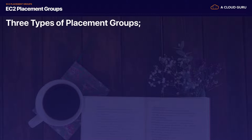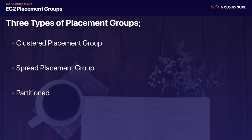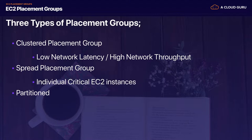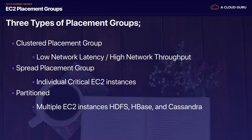EC2 placement groups define how you place your EC2 instances — there are three types. A Clustered Placement Group is for low network latency and high network throughput, with all EC2 instances in the same availability zone as close together as possible. A Spread Placement Group is for individual critical EC2 instances spread across different availability zones and different hardware, so a rack failure only affects one instance. Partitioned Placement Groups are for multiple EC2 instances in clusters — used for HDFS, HBase, and Cassandra — where each partition is on separate hardware or racks.